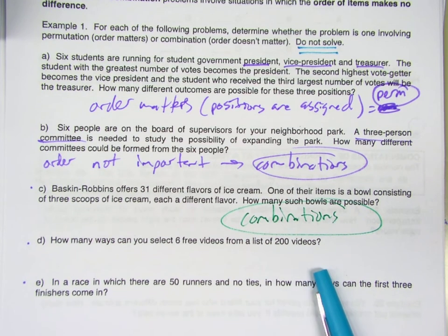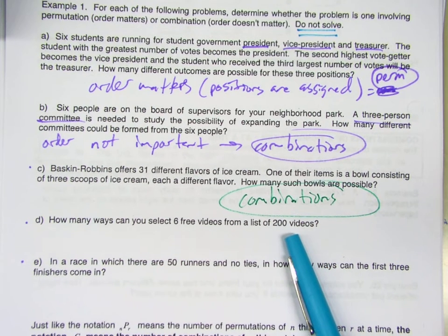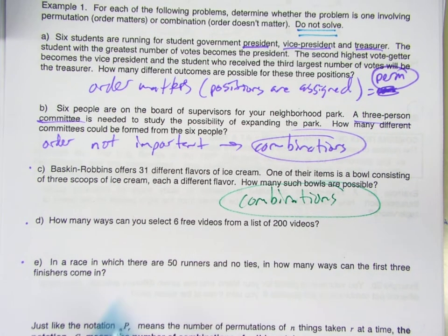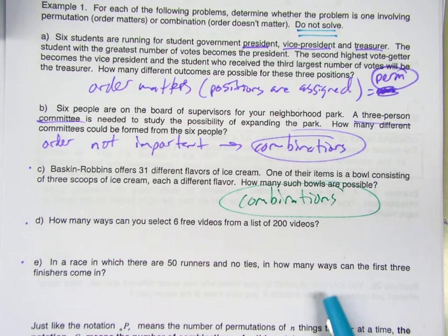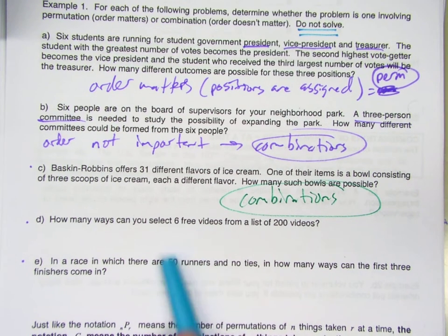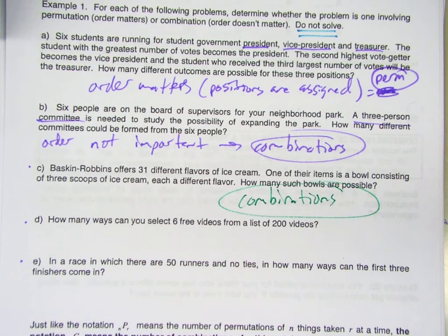I don't know what context this is, but 200 free videos—let's say movies or something. And you get to choose, or I'm sorry, I said that wrong. There's a total of 200 movies. You get to pick six of them to see for free. How many ways can you pick the six movies?